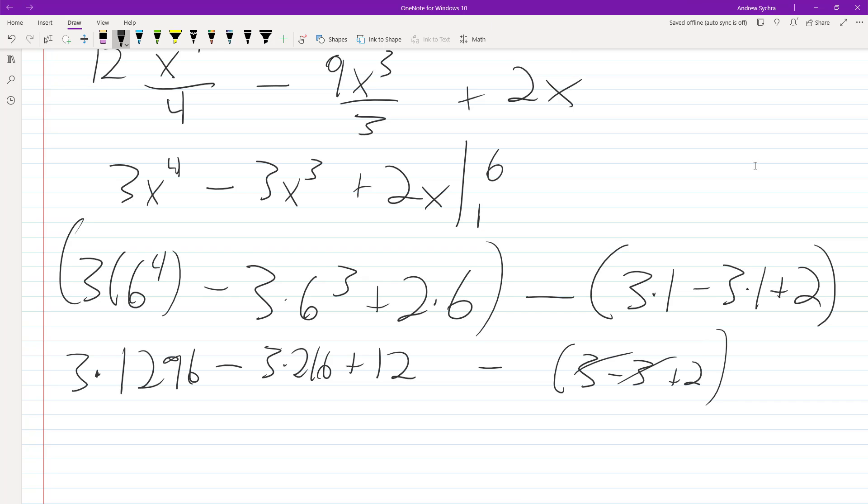And ultimately what we end up with here is 3250. And that's the area under the curve between the points one and six.